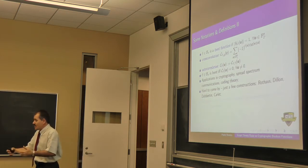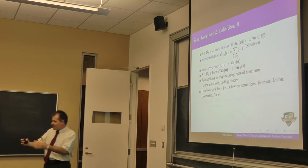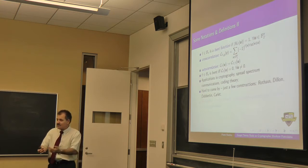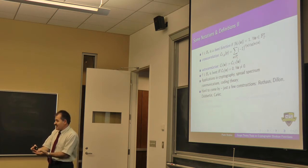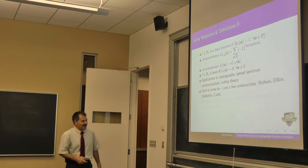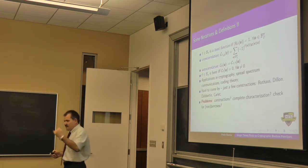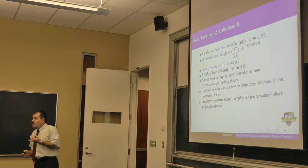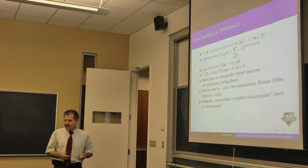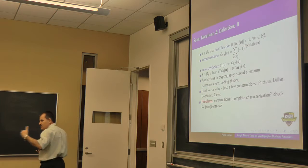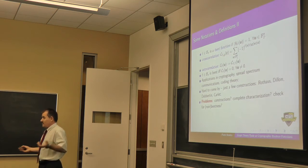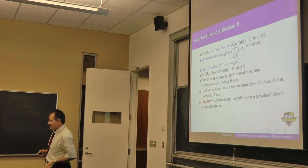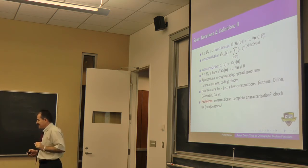Carlet's construction is more theoretical than constructive — if I ask him for a precise example outside the known classes, he can give a theoretical example but not the actual polynomial. So there are many open problems: more constructions, characterizations useful for cryptosystems, and the question of whether, given a polynomial or truth table of 2^n bits, it is possible to check if it is a bent function.